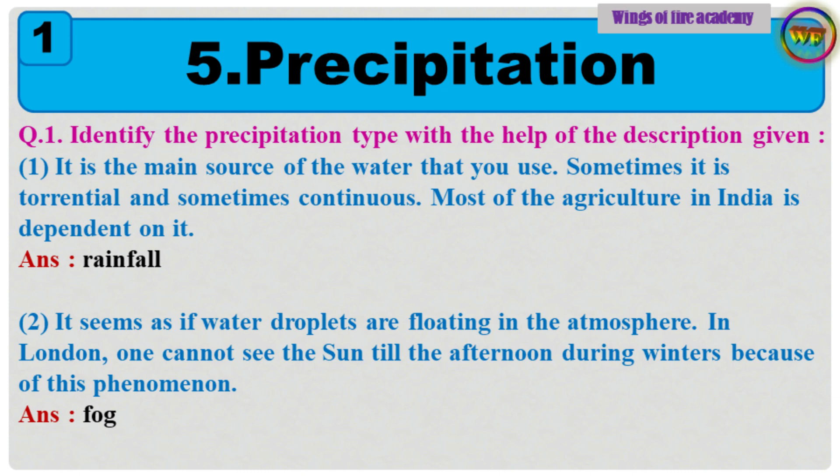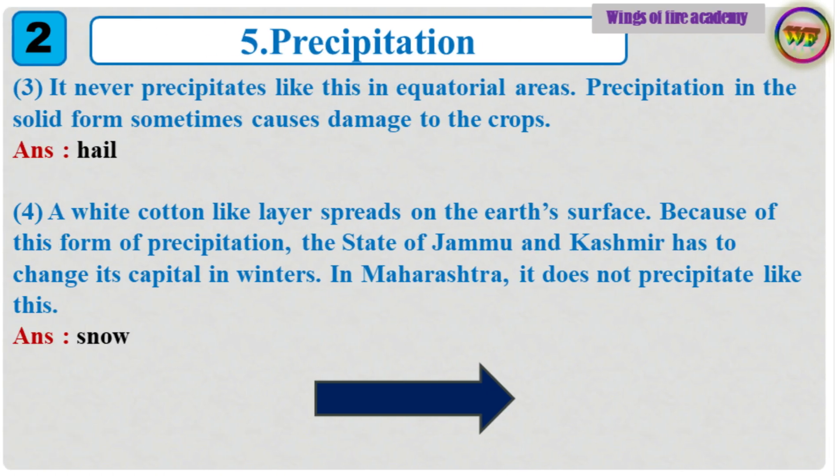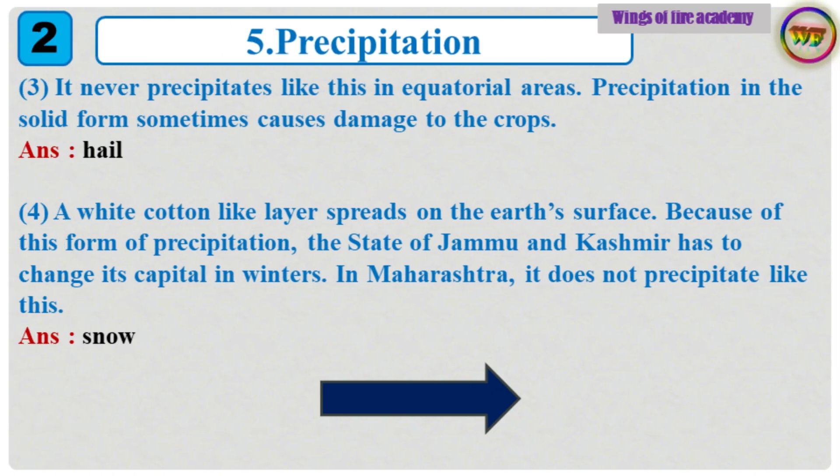2. It seems as if water droplets are floating in the atmosphere. In London, one cannot see the sun till the afternoon during winters because of this phenomenon. Answer: Fog. 3. It never precipitates like this in equatorial areas.